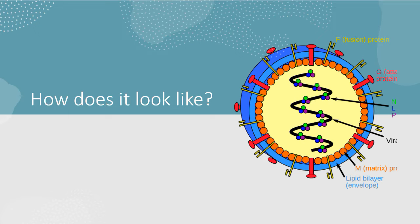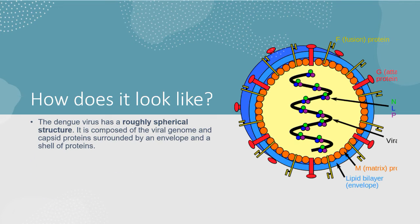How does it look like? As I mentioned earlier, there are multiple protein layers present in the capsid structure which is protecting its genetic material. It's a roughly spherical structure composed of viral genome and capsid protein surrounded by an envelope and a shell of protein. Apart from the capsid, there is a protein surrounding by an envelope which is made up of protein, as well as a shell of protein outside.